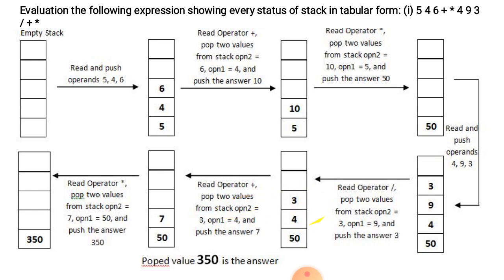Now the last operator is multiplication. We pop two values from the stack — operand 2 is 7, operand 1 is 50. We perform multiplication: 50 multiplied by 7 is equal to 350. So 350 is pushed to the stack. Since the string is now empty, we pop the final result: 350 is the answer.